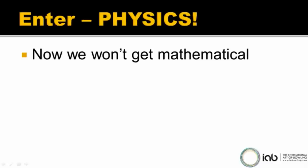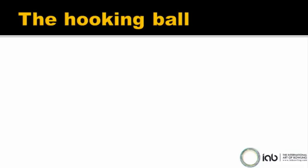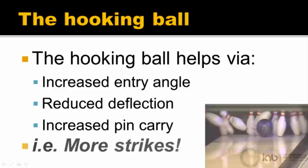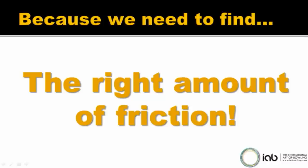And when you need help, call in men of physics, men of science. We're not going to get all mathematical here. We need to knock over 10 pins that weigh so much more than our ball, and they're going to make our ball deflect — so we need to reduce that deflection. And that's where the hooking ball comes in. The hooking ball helps you by increasing your entry angle, reducing your deflection off the pins, which in turn increases your pin carry. That is, the hooking ball gets more strikes. The downside is the hooking ball is harder to control, because we need to find the right amount of friction to control it.